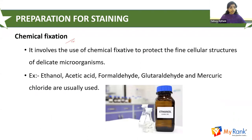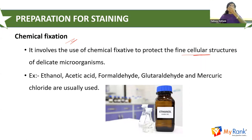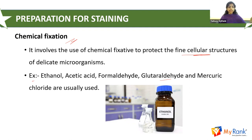The second type of fixation is chemical fixation, generally carried out for blood specimens. It involves the use of chemical fixatives to protect the fine cellular structures of delicate organisms. When certain organisms are passed through the flame, their internal structures get destroyed, so chemical fixatives are used to avoid that. Common chemical fixatives include ethanol, acetic acid, formaldehyde, glutaraldehyde, and mercury chloride.